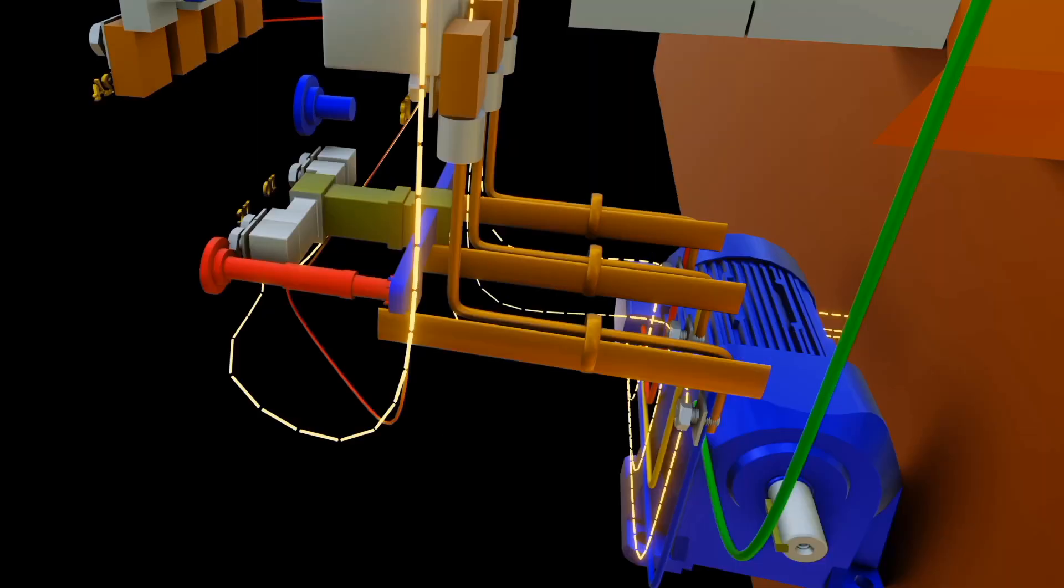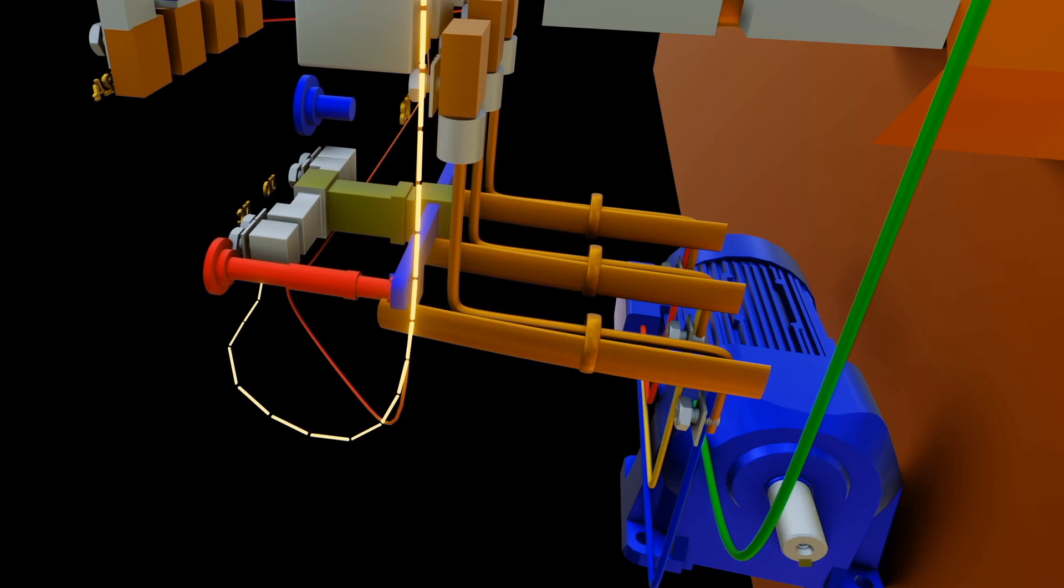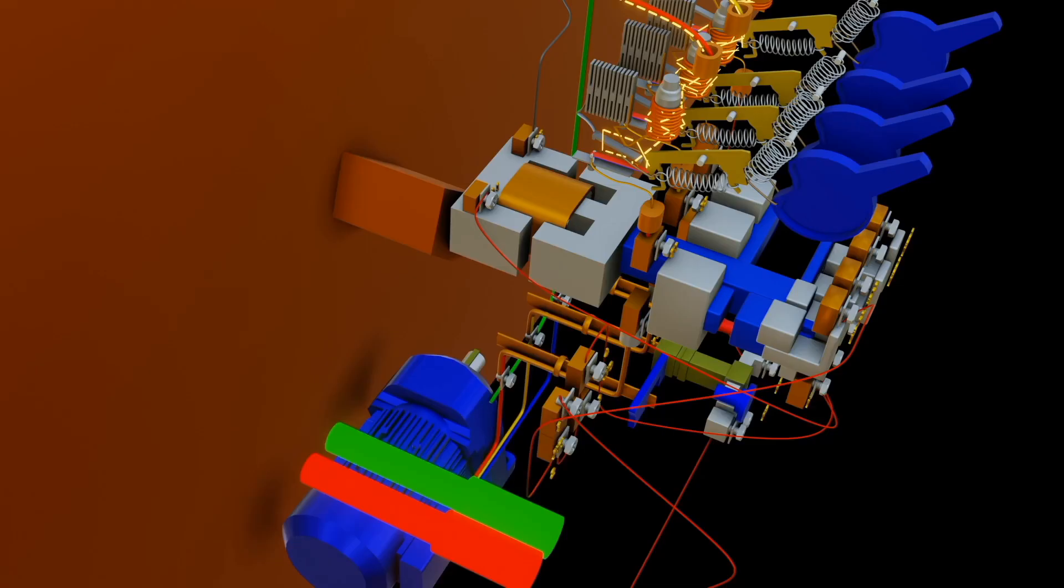A thermal overload relay is a device that protects electrical systems from overheating by switching off the power supply to the motor when current exceeds certain limit. It is based on the principle of thermal sensing, which monitors the heat generated by the motor during its operation.